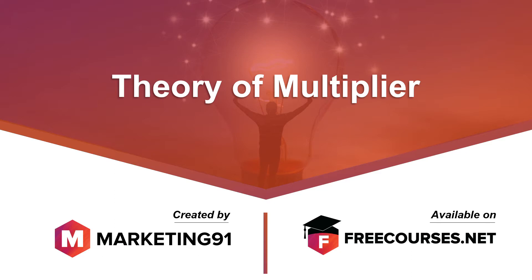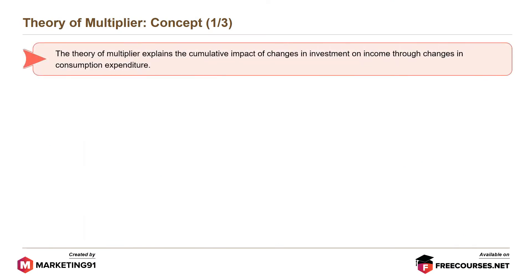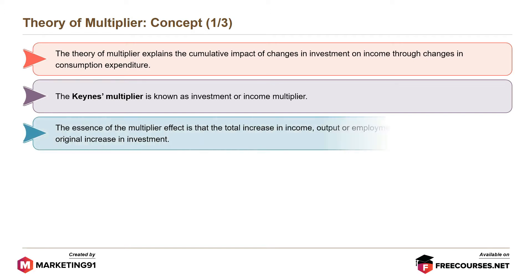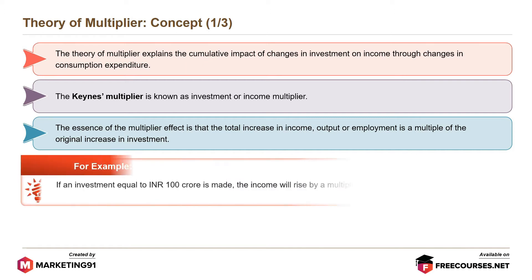Hello and welcome to marketing91.com. The theory of multiplier explains the cumulative impact of changes in investment on income through changes in consumption expenditure. The Keynes' multiplier is known as the investment or income multiplier. The essence of the multiplier effect is that the total increase in income, output, or employment is a multiple of the original increase in investment.